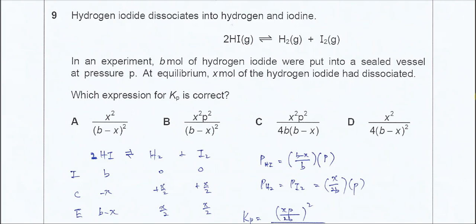Question number nine. This question is about the dissociation of HI to form H2 and I2, and it started with B moles of HI. At equilibrium, X moles of HI had dissociated. Total pressure is P. Try to get the expression for Kp.